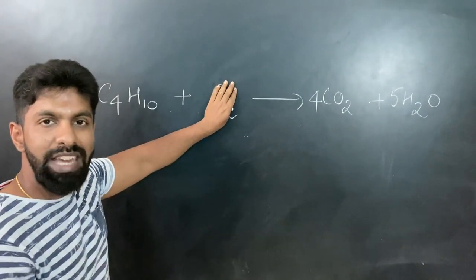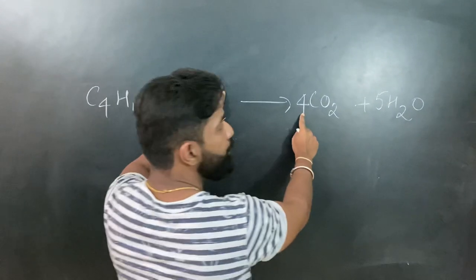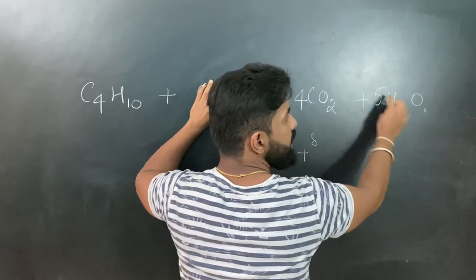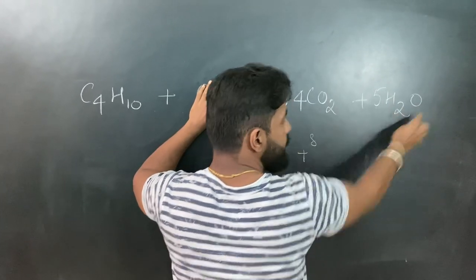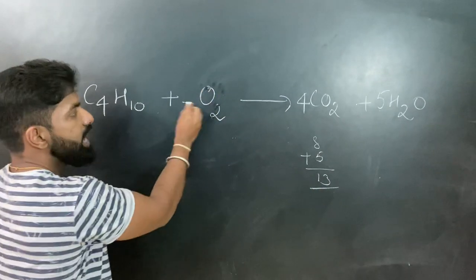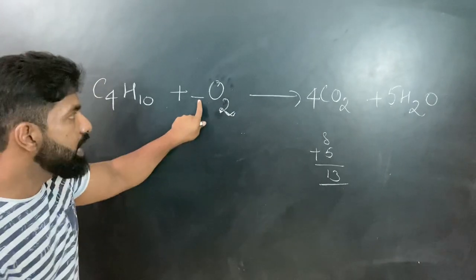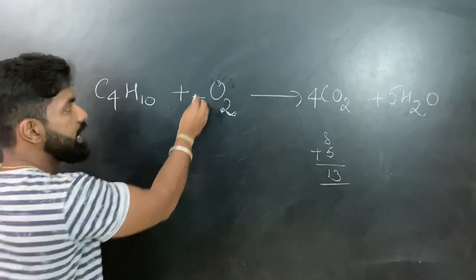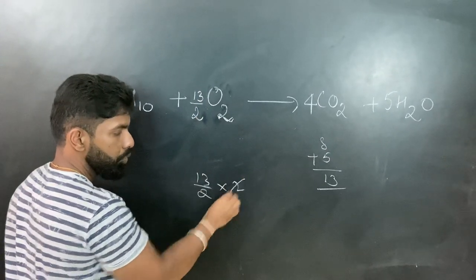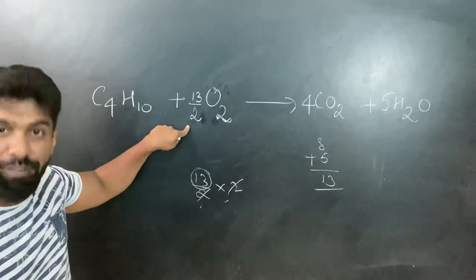The only element which is not balanced is oxygen. Now I count for oxygen: 4 times 2 is 8, plus 5 times 1 - remember it's not 1, it's 5 times 1 - so 8 plus 5 is 13. Yes, what number into 2 will give me 13? Don't you think it's 13 by 2? 13 by 2 into 2 will give me 13.